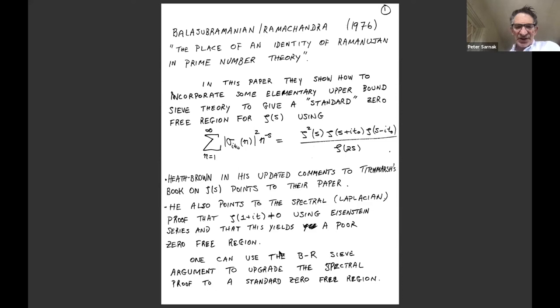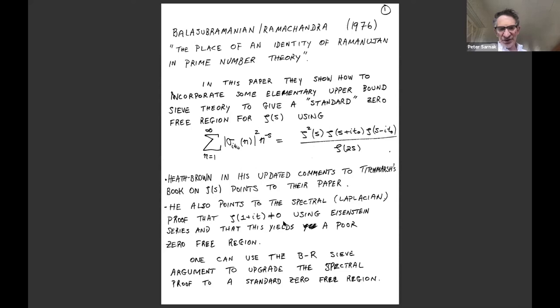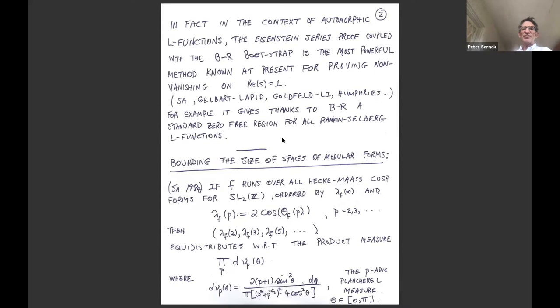He says the lower bound given by the Eisenstein series proof gives a very poor zero-free region. I have a paper in which I show that the bootstrap argument of Bala and Ramachandra allows you to bootstrap the Eisenstein proof to also get a standard zero-free region. So it doesn't give you something bad — actually it gives you something good — as long as you add this elementary sieve argument. In the context of automorphic L-functions, the Eisenstein series coupled with this bootstrap is in fact the most powerful method known today to prove non-vanishing on the line one.